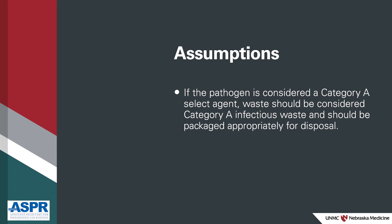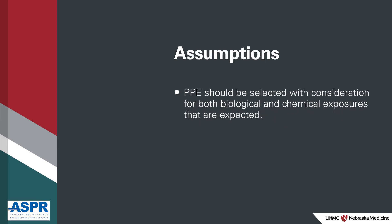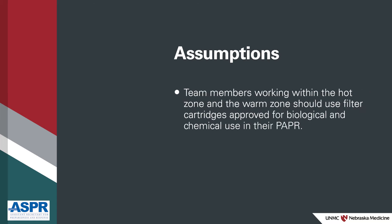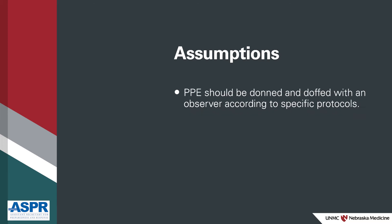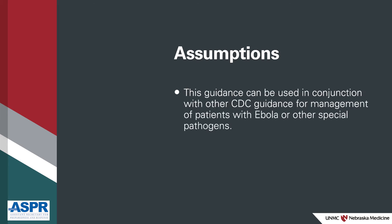If the pathogen is considered a category A select agent, waste should be considered category A infectious waste and should be packaged appropriately for disposal. Personal protective equipment should be selected with consideration for both biological and chemical exposures that are expected. Team members working within the hot zone and the warm zone should use filter cartridges approved for biological and chemical use in their PAPR. PPE should be donned and doffed with an observer according to specific protocols. This guidance can be used in conjunction with other CDC guidance for management of patients with Ebola or other special pathogens.